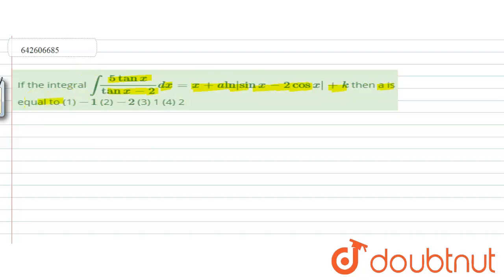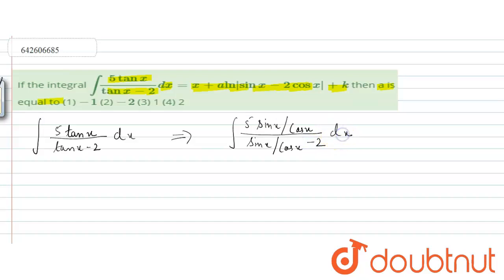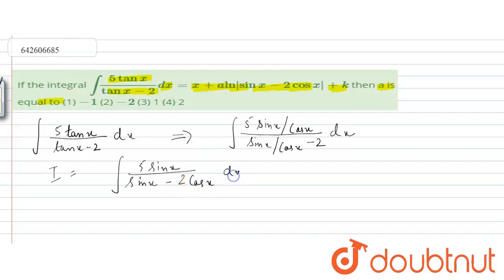Now, the integral of 5 tan x upon (tan x minus 2) dx can be written as 5 sin x upon cos x, divided by sin x upon cos x minus 2 dx. So I equals the integral of 5 sin x upon (sin x minus 2 cos x) dx.